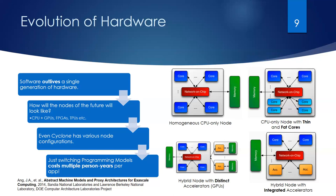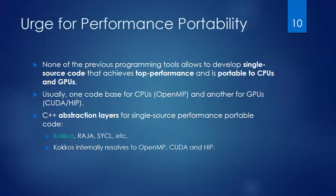Will it still be CPUs with GPUs? Will it be CPUs with FPGAs, tensor processing units, and so on? Even Cyclone here in Cyprus has various node configurations, so you cannot directly write one piece of code and target multiple configurations. And just switching programming models costs multiple person-years per application, so there is a real need for performance portability.